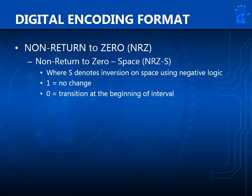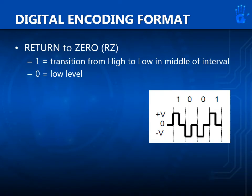Non-return to zero space, or NRZ-S, is the last type, where S denotes inversion on space using negative logic. When the bit is 1, there will be no change in the digital signal. When the bit is 0, a transition at the beginning of the interval will occur. For return to zero, or RZ: for bit 1, a transition from high to low in the middle of the interval will occur. For bit 0, the opposite happens — a transition from negative V to 0 will occur.